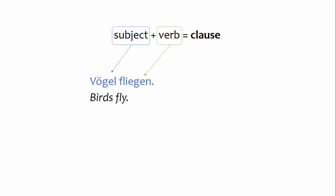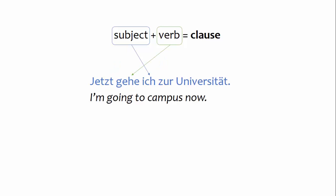To understand how sentence connectors work, first you need to understand what a clause is. At its simplest, a clause is made up of a subject and a verb. A clause can contain other words and phrases too, such as direct objects, prepositional phrases, adverbs, and so on. But again, a clause is distinguished by the fact that it has, at minimum, a subject and a verb.